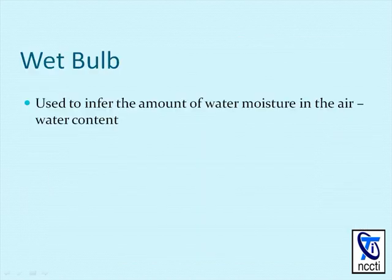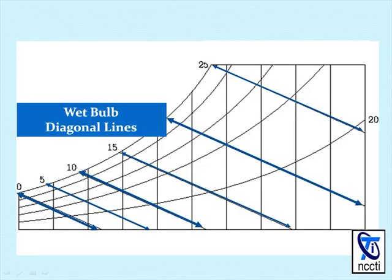Wet bulb is used to infer the amount of water moisture in the air. It's just a measurement of the evaporation rate. Wet bulb temperature is represented by diagonal lines, with the wet bulb values located on the top left-hand side of the chart.